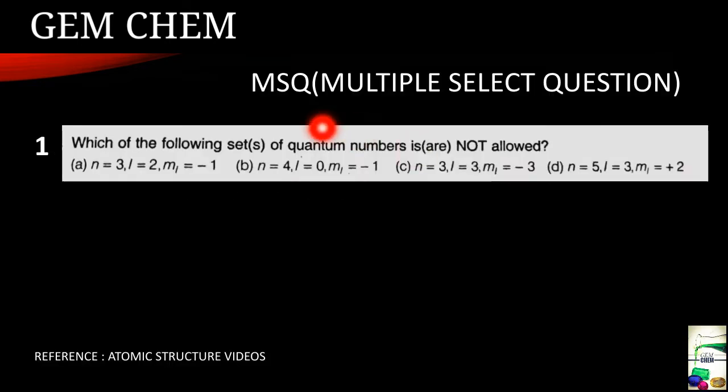First question is a multiple select question, meaning there is a multiple answer for this particular question. The question is: which of the following sets of quantum numbers is or are not allowed? So let us write the criteria for the quantum number. We know that L should be equal to 0 to N minus 1.